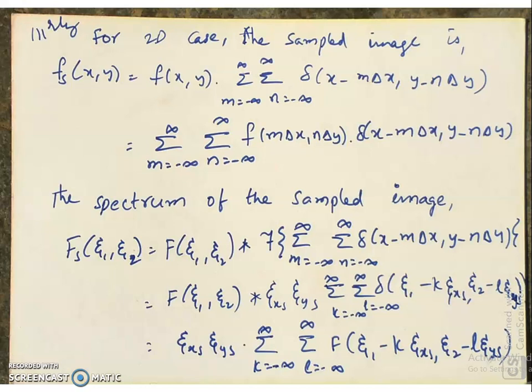This is summation over m and n from minus infinite to infinite of f of m·delta_x, n·delta_y multiplied with delta of (x minus m·delta_x, y minus n·delta_y), using the shifting property of the impulse function. We are using the separability property of the impulse function: delta of x, y equals delta of x multiplied by delta of y, which is a separable function. We use separability and the separability property of the Fourier transform here.